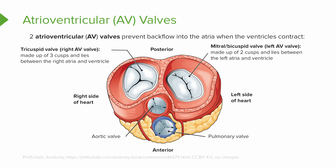Our two atrioventricular valves are going to prevent backflow into our atria when our ventricles contract. The tricuspid valve on the right side of the heart is made up of three cusps that lie between the right atria and ventricles. The mitral valve, or the left atrioventricular valve, is going to be made up of two cusps and lies between the left atria and ventricles.